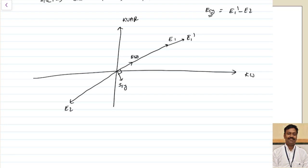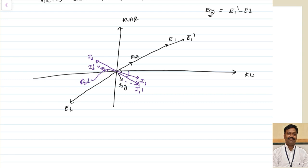Now taking the different components: initially I1 equals I2. The net current supplied by machine 1 becomes I1 dash = I1 + Isy, and for machine 2, I2 dash = I2 + Isy (in the opposite direction). When you add them, I1 dash has an increased angle phi1, and I2 dash has a decreased angle phi2. So power factor 1 is decreased and power factor 2 is increased.